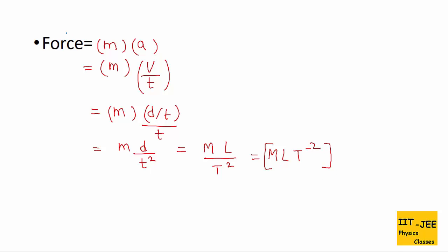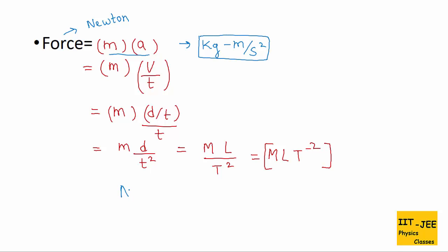The SI unit of force is Newton. Using this formula, for mass it is kg and for acceleration the unit is meter per second squared. So we get Newton equals kg meter per second squared. Both are units of force — these are called equivalent units. Thus Newton is equivalent to kg meter per second squared.